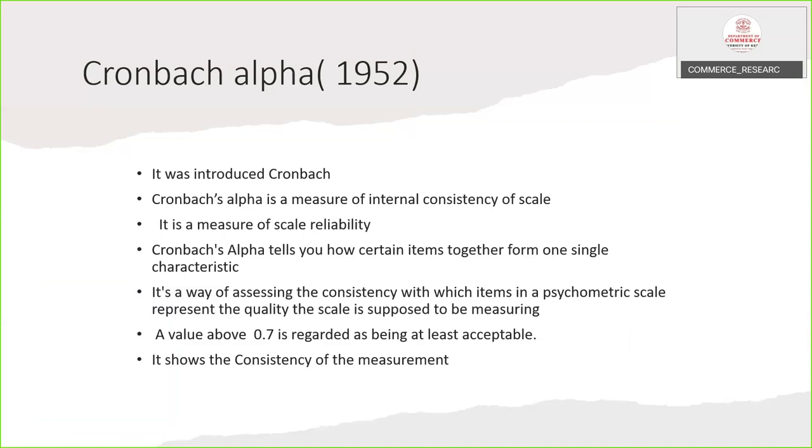Cronbach alpha tells you how certain items together form one single characteristic. It is a way of assessing the consistency with which items in a psychometric scale represent the quality the scale is supposed to be measuring. A value above 0.7 is regarded as being at least acceptable. It shows the consistency of the measurement.